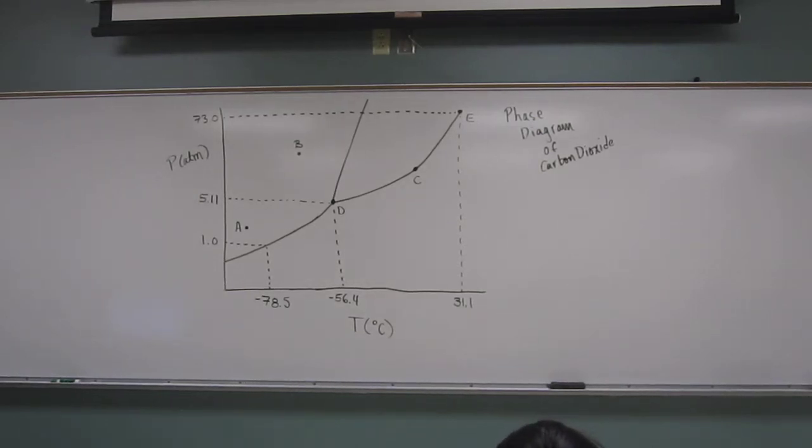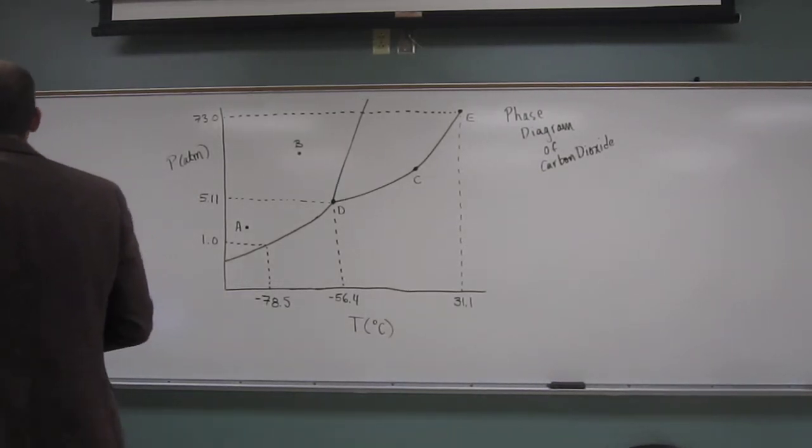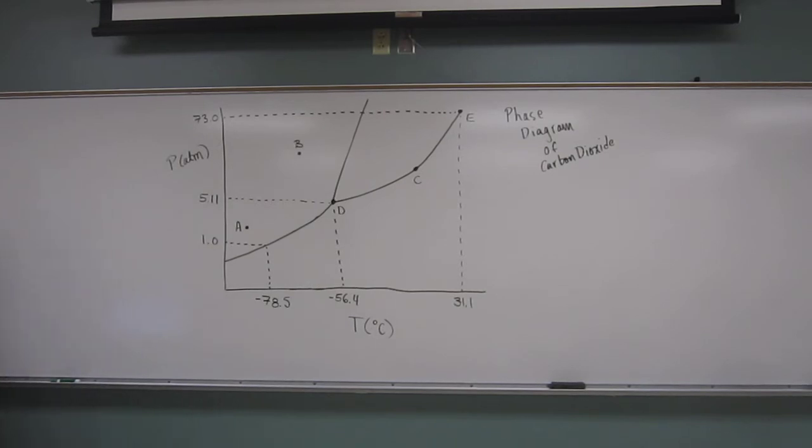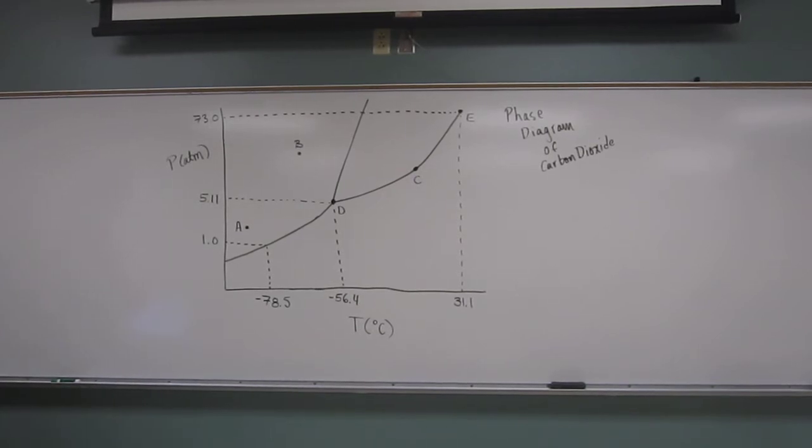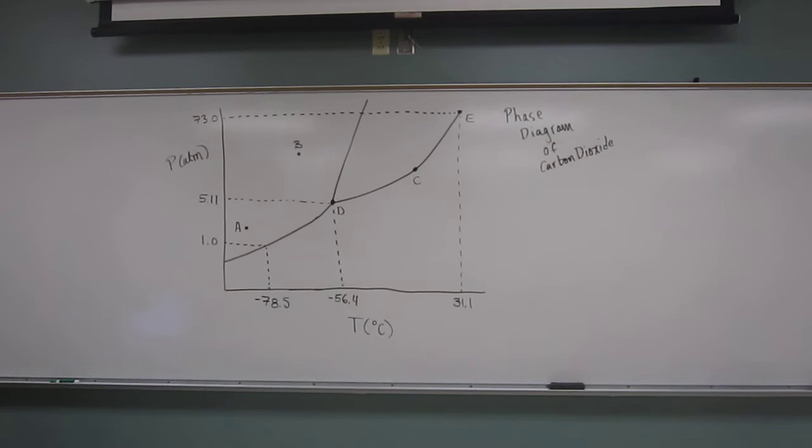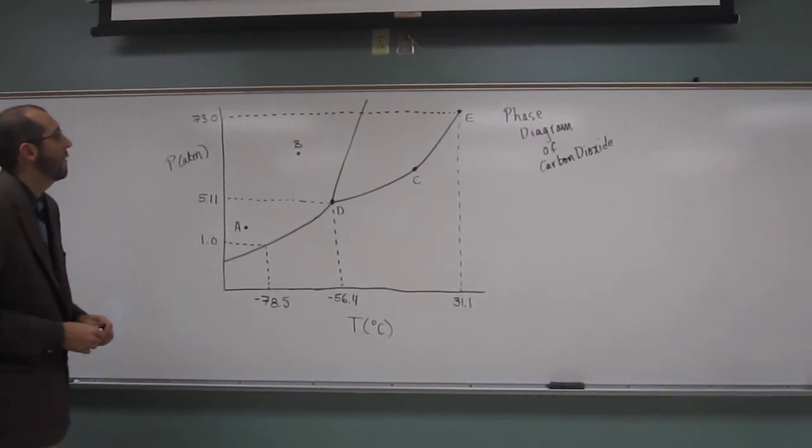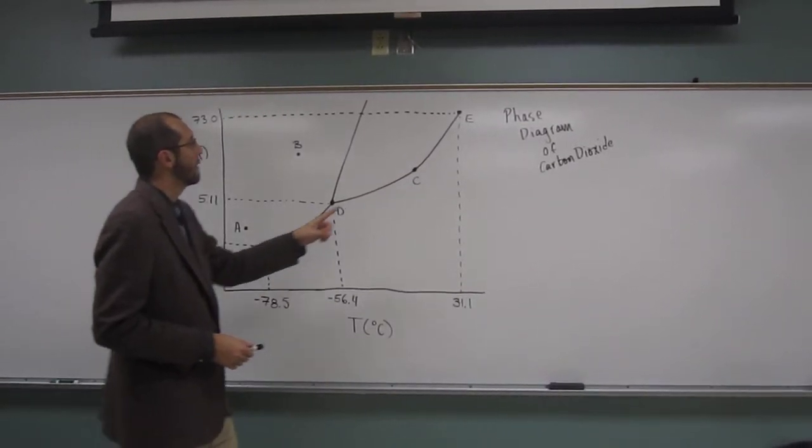Let's try this second phase change diagram question. So this is the phase diagram of carbon dioxide and it says for this phase diagram answer the following question. So the first question says what phases are present at point C?